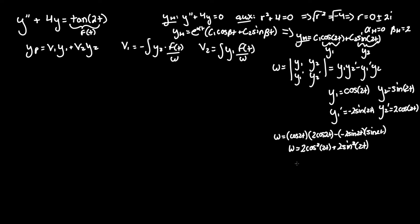Do you see what this can turn into? We know that sine squared of any value x for instance plus cosine squared of x equals 1. So we can factor out the 2 to be sine squared plus cosine squared which is just 1. Therefore Wronskian equals 2.